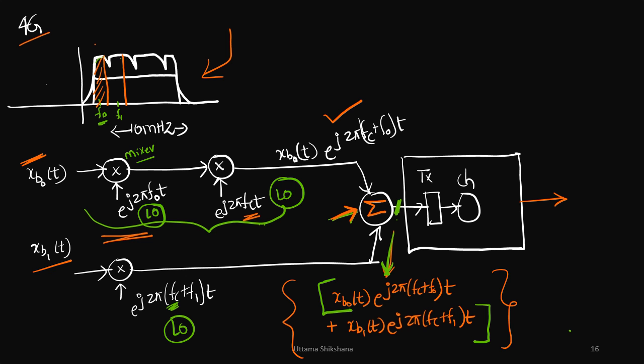If there are more subbands then we needed more local oscillators. So we need to reduce the number of local oscillators.